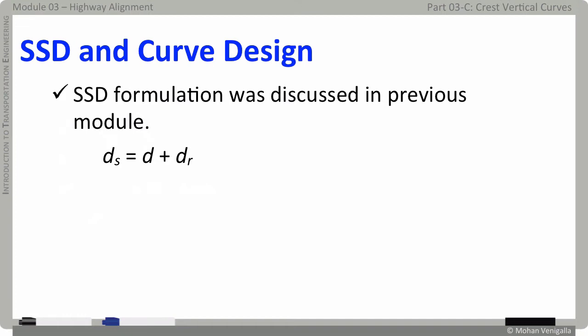For more clarity, we also refer to d sub s as SSD which stands for stopping sight distance. By expanding the two terms on the right hand side of the equation, we have this equation for stopping sight distance SSD. Remember, in this equation, v1 is the speed from which the vehicle has to come to a stop. Here, v1 can be design speed, posted speed or simply operating speeds. Also, remember to use compatible units for all the variables in this equation.